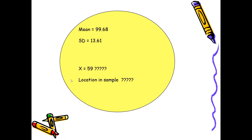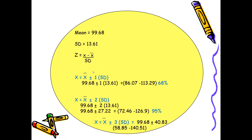Going back to find the location of x = 59: the three standard deviation range is 58.85 to 140.51. When I talk about plus minus three standard deviations, 99% of observations lie within this range. The value of 59 is almost present at minus three standard deviation in the data set.